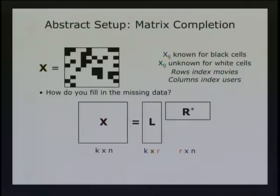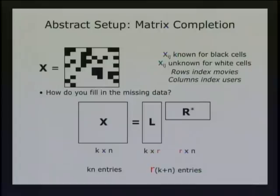The reason this is useful is parameter counting: the big matrix has k times n entries, while the smaller factored form has r times k plus n entries, which is much smaller. In the Netflix case we had 8 billion being k times n, but if there are only 20 or so factors that might give rise to your movie preferences, we're down into the tens of millions — and in that case the problem is actually over-determined. This was actually the basis of the first publication on the Netflix prize problem.